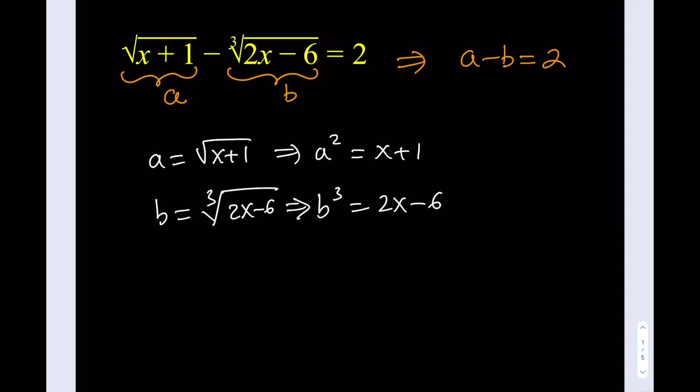So A squared equals this, and B cubed equals that. So what about it? Here's what we're going to do now. From both of these equations, we are going to isolate x. From the first equation, I can go ahead and subtract 1 from both sides, and that's going to give me x equals A squared minus 1. From the second equation, I can actually add 6 to both sides, and that's going to give me B cubed plus 6, and then I can divide both sides by 2, and that's going to give me x again.